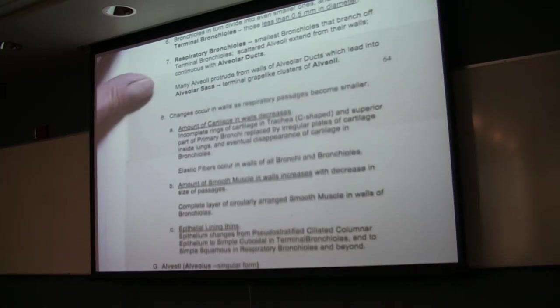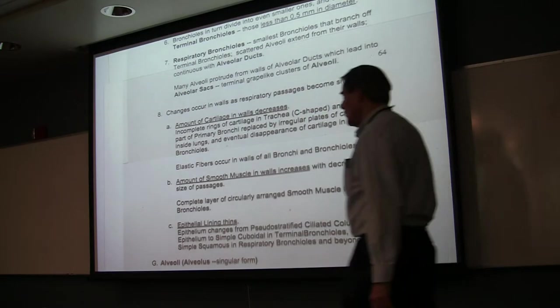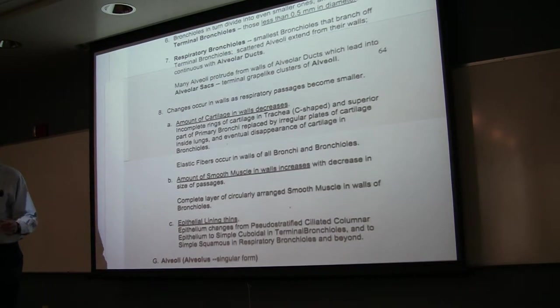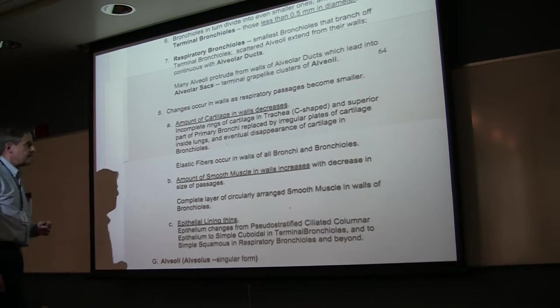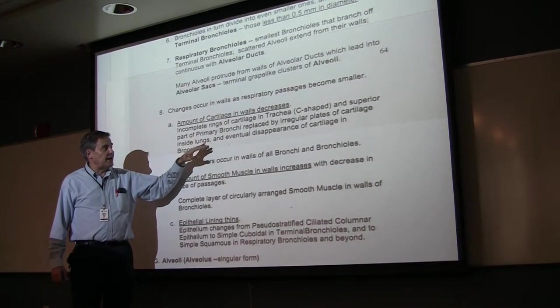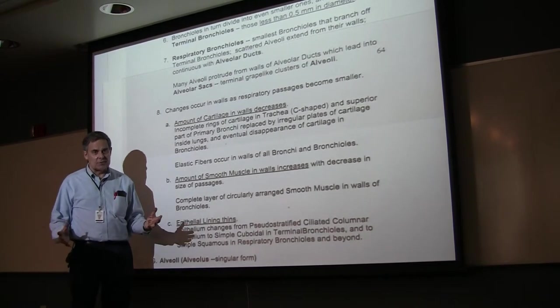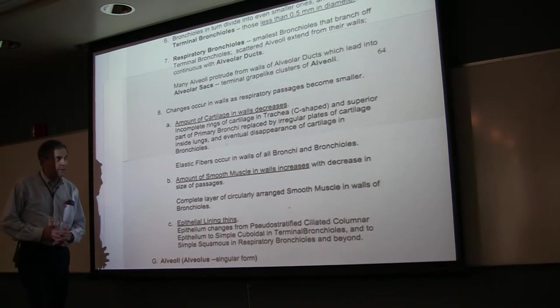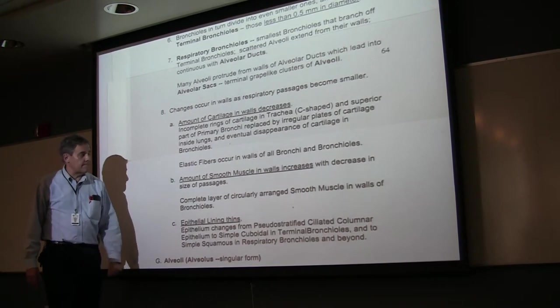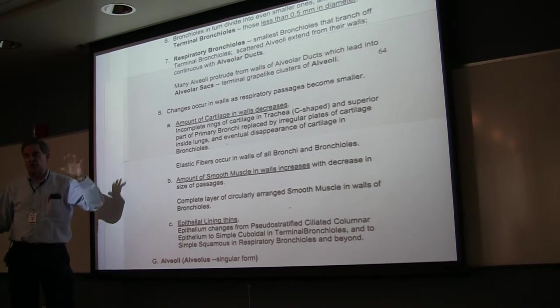As we descend the respiratory tree, we see some changes occurring. One thing is the amount of cartilage in the wall decreases. You go from the large cartilages in the larynx to the C-shaped pieces in the trachea, then you have pieces of cartilage—smaller pieces in the primary, even smaller in the secondary, and smaller again in the tertiary. By the time you leave the bronchi, the cartilage disappears. The cartilage ends in the tertiary bronchi. You have elastic fibers in the walls of all the bronchi as well as the bronchioles, so you have some resilience there.